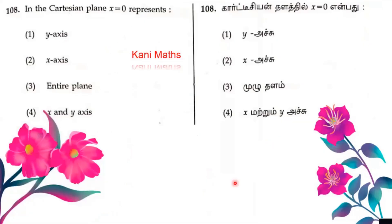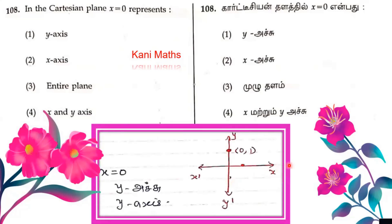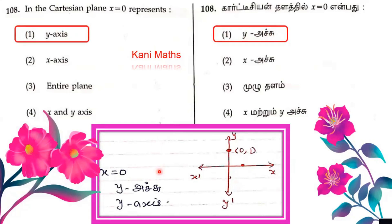Question number 108. In the Cartesian plane, x is equal to 0 represents. Option 1 is y-axis, option 2 is x-axis, option 3 is the entire plane, option 4 is x and y axis. When x equals 0, that is the y-axis. Option 1.